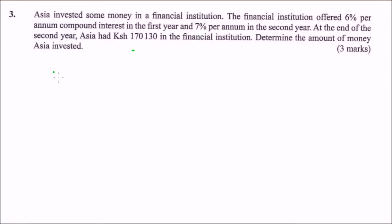This is Mathematics Paper 2, 2018, Question Number 3. It says: ASIA invested some money in a financial institution. The financial institution offered 6% per annum compound interest in the first year and 7% per annum in the second year. At the end of the second year, ASIA had 170,130 in the financial institution. Determine the amount of money ASIA invested.